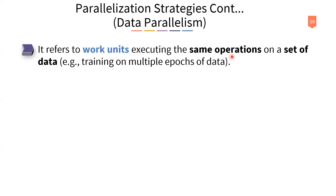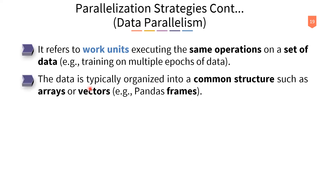First, data parallelism refers to work units executing the same operations on a set of data. For example, training on multiple different subsets or epochs of data — training the same procedure on all epochs. The data is typically organized into a common structure such as arrays or vectors, for example in image processing with pandas arrays and vectors.